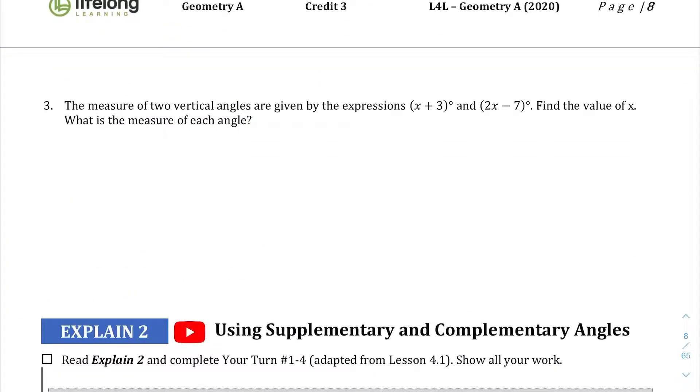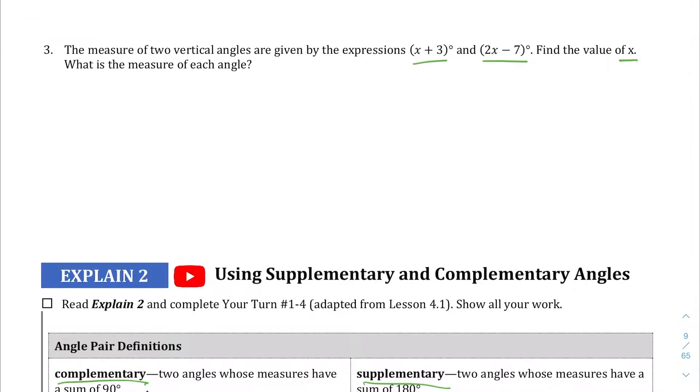One more question, question number three. The measure of two vertical angles are given by these expressions, and we know that vertical angles are equal. But there's two parts to this question. We need to find the value of x, but we also need to find the measure of each angle. The nice thing is, since vertical angles are congruent, you only have to find one because the other one is going to be the exact same value. Let's set up this equation again, so we should get x + 3 equals 2x - 7. I like to move the smaller variable. 3 equals x - 7. Add 7 to both sides. To isolate the variable, we get 10 equals x. So there's one part of my question.